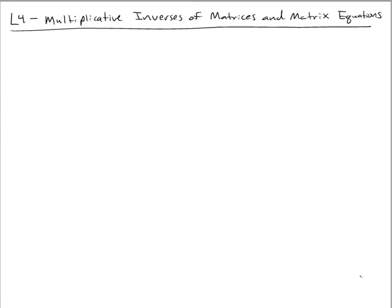First, we want to talk about what a multiplicative identity is in terms of a real number, and then what it is in terms of a matrix. If we take some number times one, we get that number back, so one is called the multiplicative identity. This is true whether we take a times one or one times a.